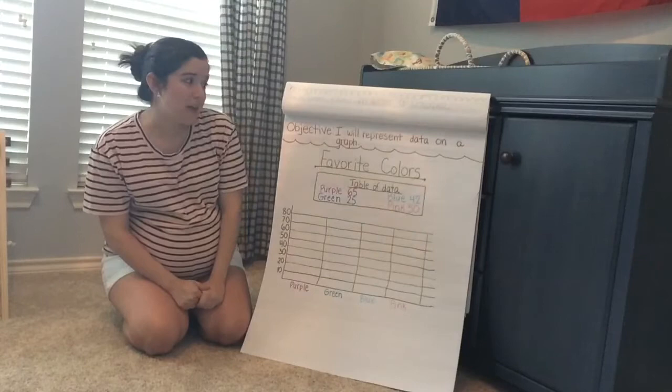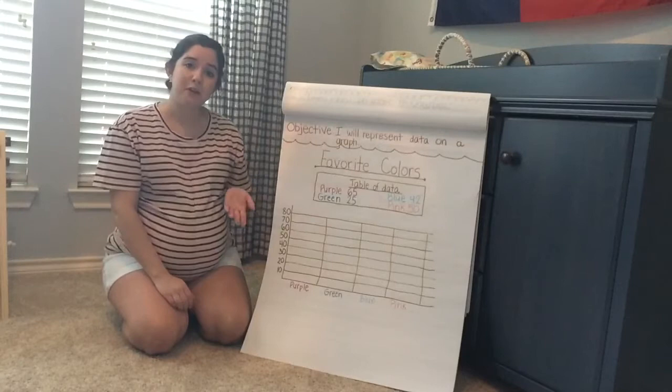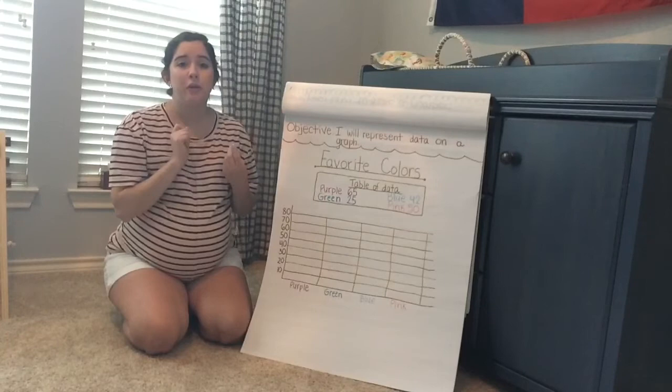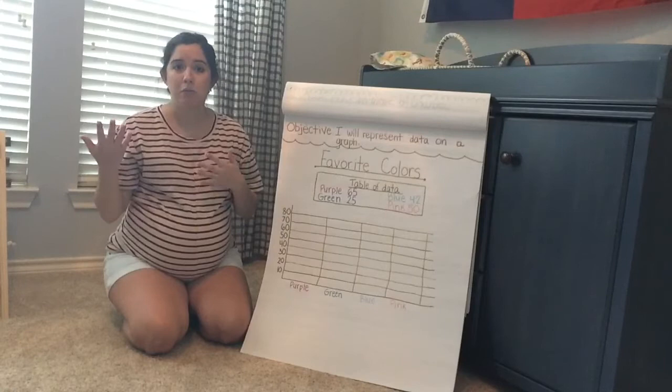Our objective is: I will represent data on a graph. As we know, there are lots of different types of graphs, but we specifically learned about four. We learned about a table and a bar graph, which I'm going to be reviewing with you guys, and then there are other types of graphs that you'll be learning about in third grade, fourth grade, and so on.